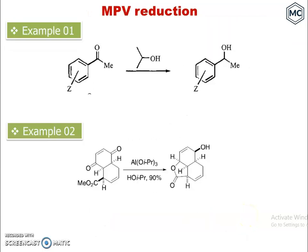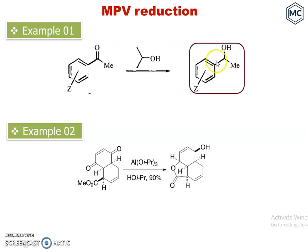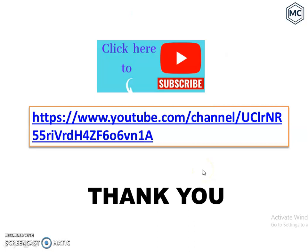In the first example, acetophenone reacts with a secondary alcohol — the ketone is converted to an alcohol via MPV reduction. In the second case, two carbonyl groups are reduced by MPV reduction: both carbonyls become hydroxyl groups, and the ester then undergoes cyclization to form the final product. Thank you for watching.